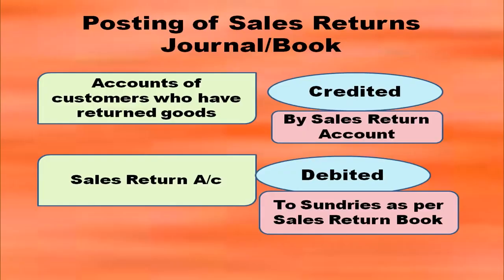For posting the sales returns book: accounts of customers who returned goods are credited — in the particulars column of the customer's account, on the credit side, write 'By Sales Returns Account'. In the sales returns account, on the debit side in the particulars column, write 'To Sundries as per Sales Returns Book'.